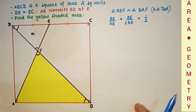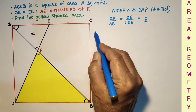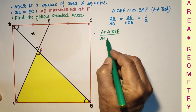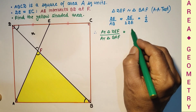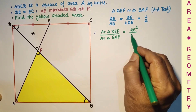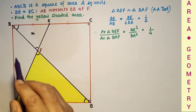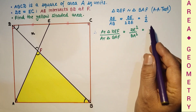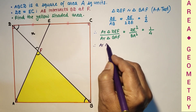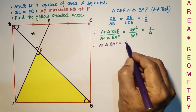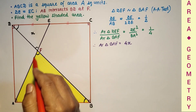If two triangles are similar, then the ratio between their areas equals the ratio between the squares of their corresponding sides. So area of triangle DEF upon area of triangle BAF equals DE² upon BA², which is (1/2)² = 1/4. We assumed area of triangle DEF as X, so X upon area of triangle BAF equals 1/4. Therefore area of triangle BAF equals 4 times area of triangle DEF, which is 4X.